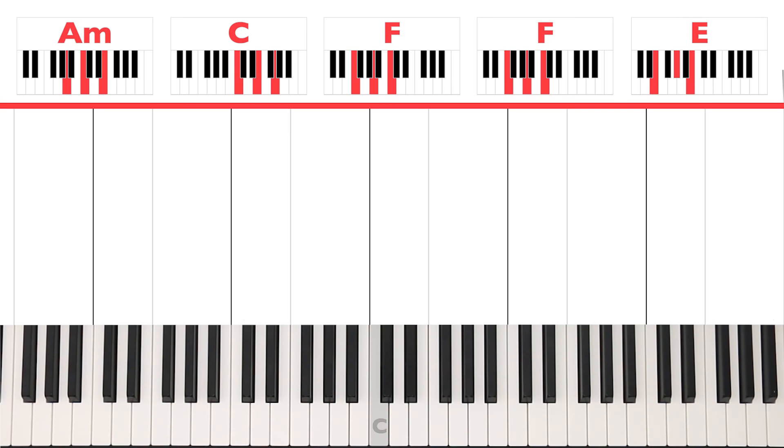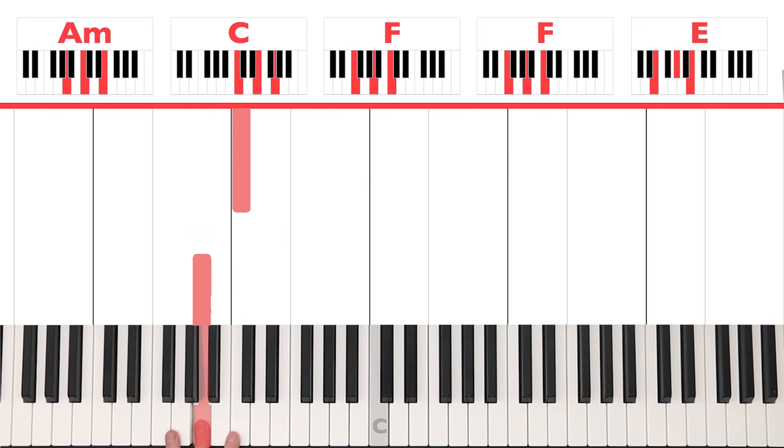So first of all, I want you to have a look at the chords above the piano. We've got A minor, C, F, F and E. And if you don't know what that means, that's absolutely fine. I'm going to teach you all of the notes you have to play anyway. So just sit tight and relax. But for now, I want to have a look at the left hand. And the left hand is simply going to play single notes. And which notes do you have to play? The name of the chord. So A minor, you're going to play an A. C, you're going to play C. F, you're going to play F. F again and E.